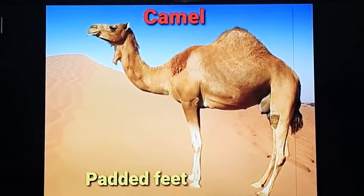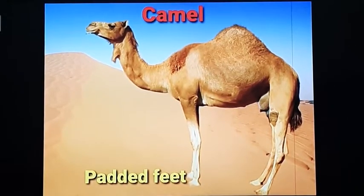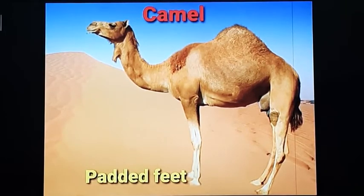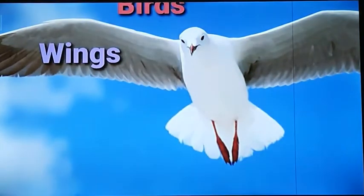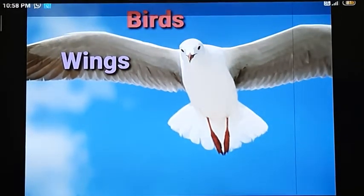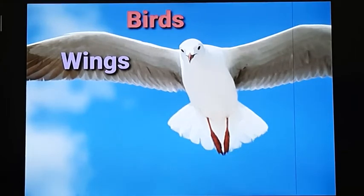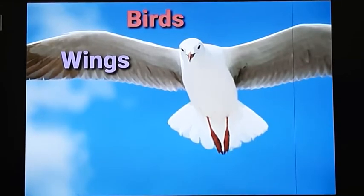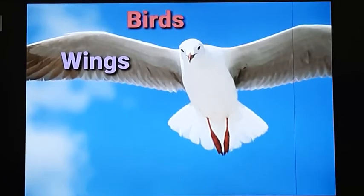That is why the camel is called the ship of the desert. The camel has a hump on its back in which it stores fat, and also stores water in its stomach. That is why a camel can live without food and water for several months. Birds are aerial animals which can fly in air. For flying, their forelimbs are modified into wings. Their hind limbs are quite short, which help them to move on the ground, and they use their wings to fly in the air.